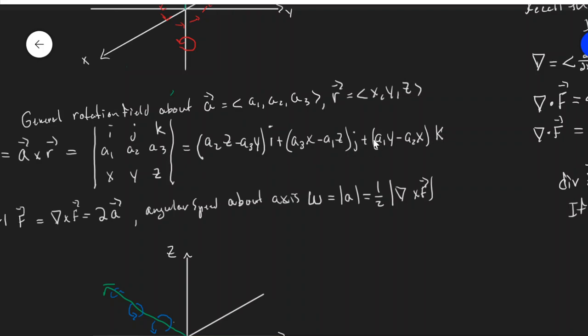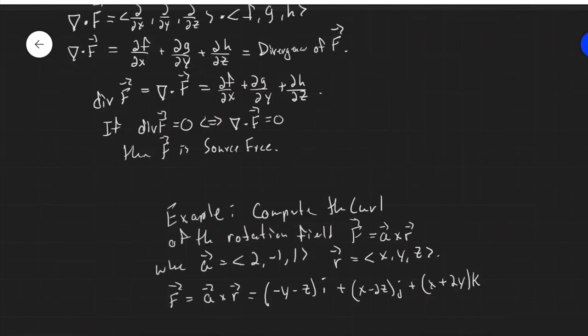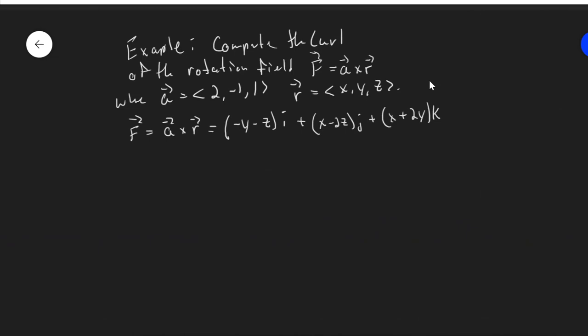But what we get here is minus y minus z in the i direction plus x minus 2z in the j direction plus x plus 2y in the k direction. And all I did to get that was I used this general formula for the determinant of the cross product of a and r. So given by this, just plugging in a1, a2, and a3. Where a1 is 2, a2 is negative 1, and a3 is 1. And I end up with this.